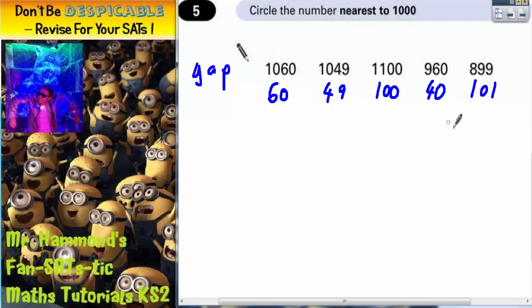Now we know the gap for each one to 1000. The one which is nearest 1000 is the one with the smallest gap. So the one with the smallest gap will be nearest 1000.